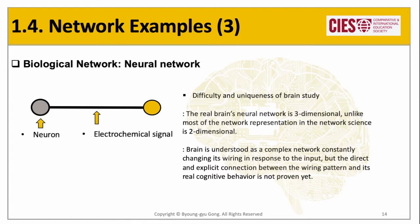The last network example is the biological network, which is one of the key areas of network science. In particular, the neural network in our brain has been a source of inspiration for physical and electrical network systems created for computers and chips. A special feature of neural networks is that they are three-dimensional, unlike most other networks. Also, the neural network is dynamic, changing its shape and pattern according to input and output frequency and intensity, making it one of the most challenging network objects for scientists.